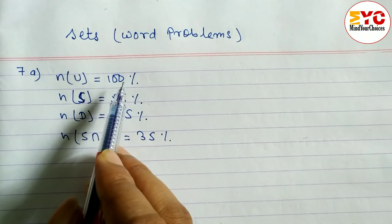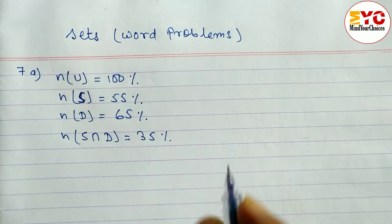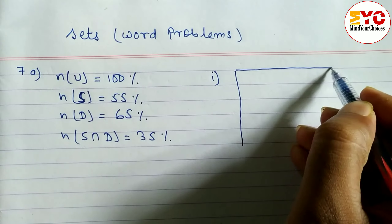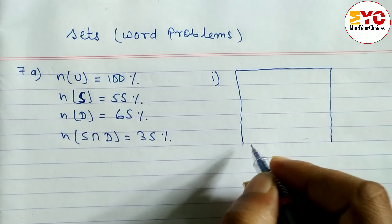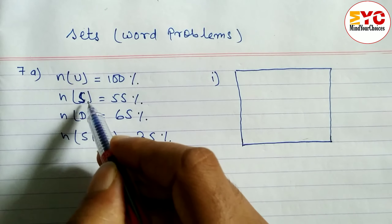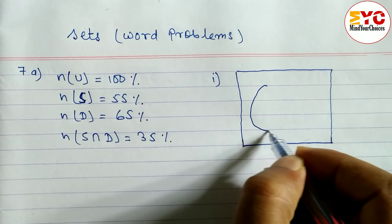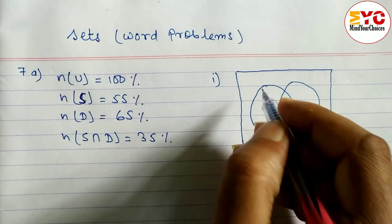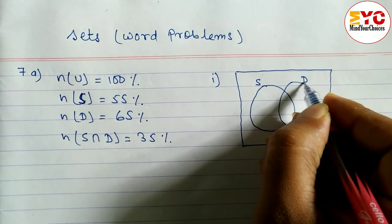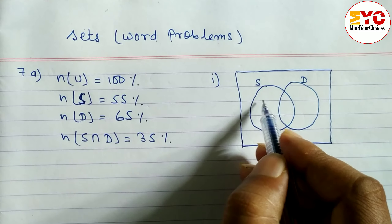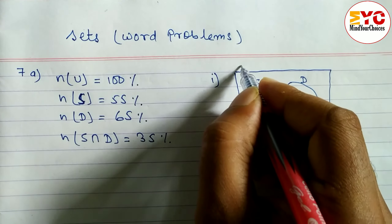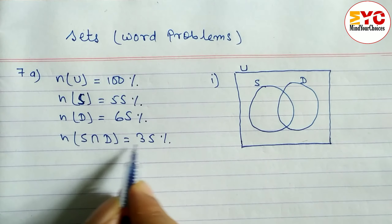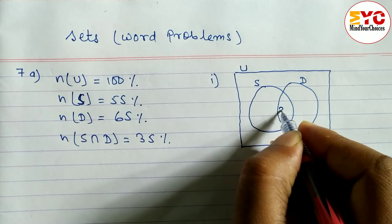In number one, we have to show this in a diagram. There are two sets: S for song and D for dance. We draw two overlapping circles — this one is for song and this one for dance. At the middle, which means the intersection, S ∩ D is equal to 35 percent, so we write 35 percent there.